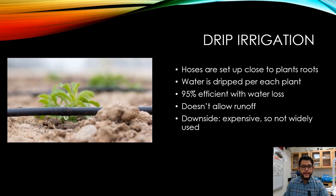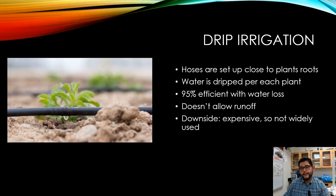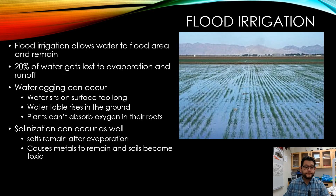The downside of drip irrigation is that it's very expensive, so it's not widely used. That cost is what's holding it back, and you'll see similar trade-offs with many other irrigation methods. Flood irrigation, on the other hand, simply allows water to flood the entire area.